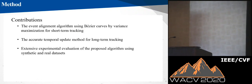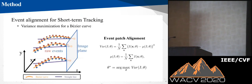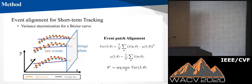We propose the event patch alignment method for short-term tracking and the temporal update method for long-term tracking. For short-term tracking, we parameterize the trajectory of events with a Bezier curve, then align the events to the patch to maximize the variance. By doing this, we can associate the events and estimate the trajectory of features simultaneously.